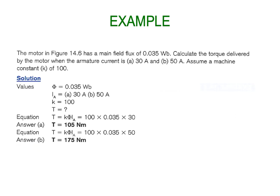We have Φ = 0.035, k = 100, and two currents: 30 A and 50 A. Applying T = kΦI: for 30 amps — 100 × 0.035 × 30 = 105 newton metres. For 50 amps, only the current has changed, so the torque increases to 100 × 0.035 × 50 = 175 newton metres, as expected.